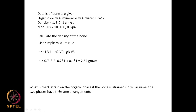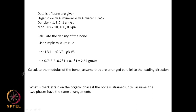Now, to calculate the modulus of the bone assuming the phases are arranged parallel to the loading direction, we use the Voigt model: E = 0.2 × 10 + 0.7 × 100 + 0 = 72 GPa. So the modulus of the bone is 72 gigapascal. The mineral contributes the maximum because it is 78 percent, and water contributes nothing to the modulus.